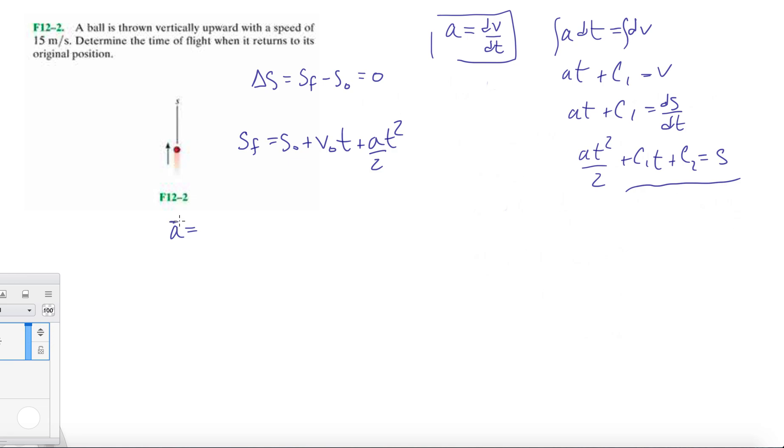For a, we're going to use minus g, because gravity is always pointing down. It's a vector. We know that the change in position is zero. Our initial velocity is 15 meters per second, and we know a is going to be minus g.